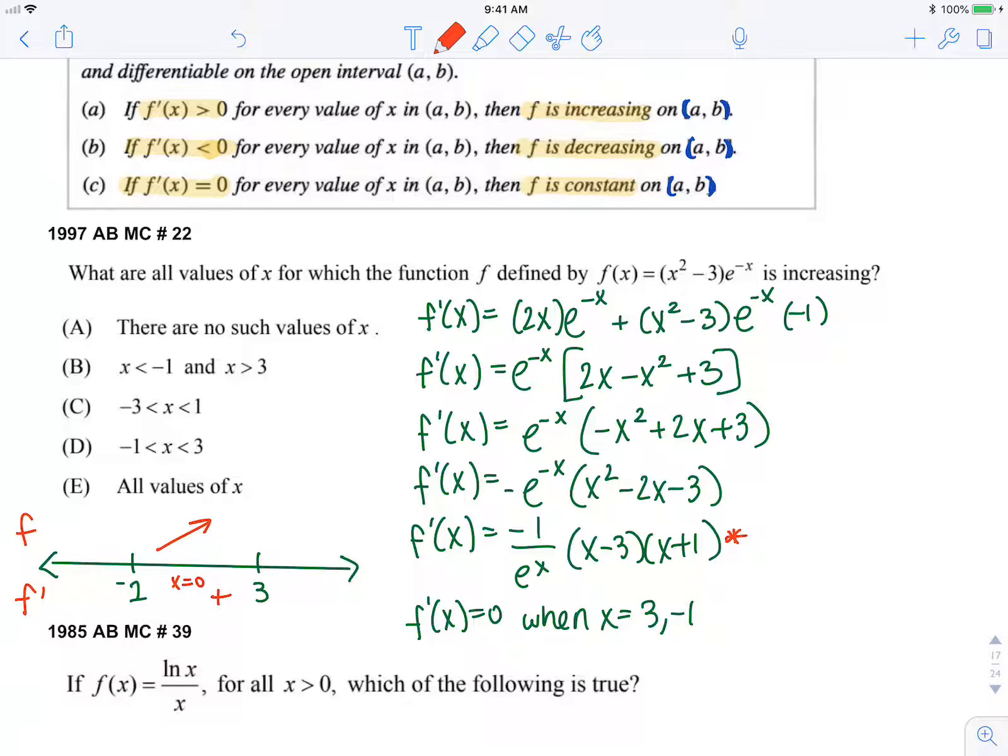If I choose a number less than negative 1, let's say x is negative 2, I have a negative times a negative which is a negative, which means it's decreasing.